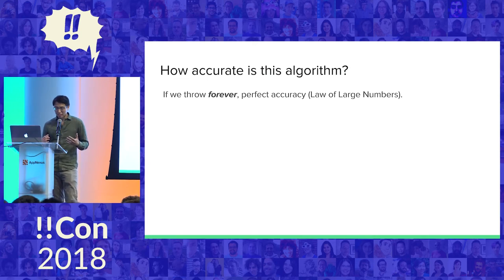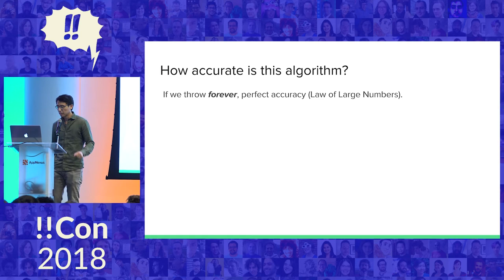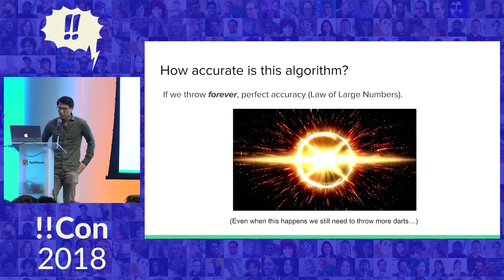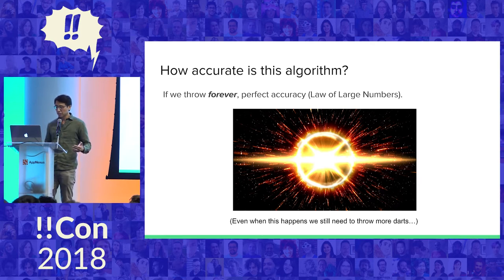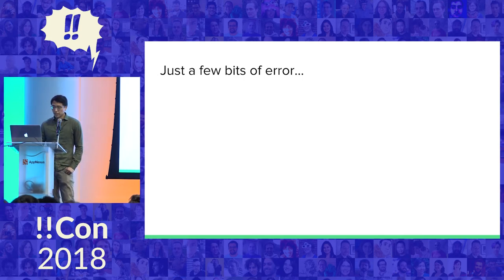Let's go back to the question of how many darts do we need to throw? More generally, how accurate is this algorithm? The cop-out answer here is if we threw forever, if we could just sit at a bar forever and throw darts, we would get perfect accuracy. This is a consequence of the law of large numbers. But that's not really an answer because when the earth implodes and the sun happens, we still need to be throwing darts. We would like to do better than throw forever.